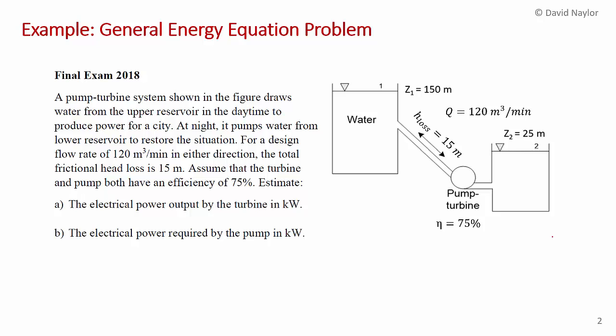The design flow rate is 120 cubic meters per minute, so that's 2 cubic meters per second in either direction. The total frictional head loss in the pipe due to viscosity and turbulence is 15 meters, and we're told to assume that the turbine and pump both have an efficiency of 75%. In part A we estimate the electrical power output of the turbine during the day with water flowing from the upper to the lower reservoir, and in part B we estimate the electrical power required to pump the water back uphill. The flow is going in opposite directions in parts A and B.